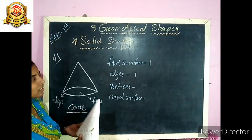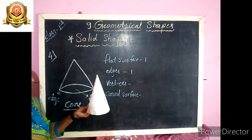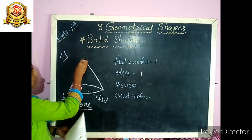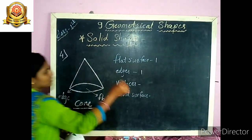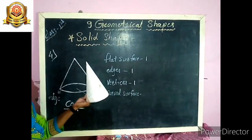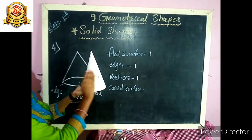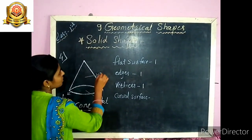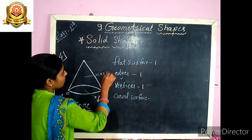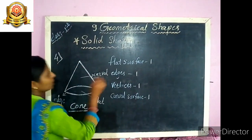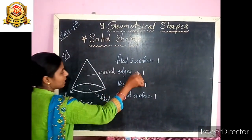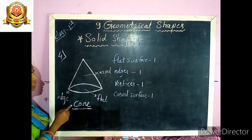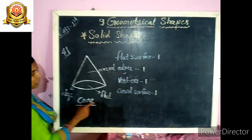How many vertices are there? Vertex means corner. Cone has only 1 vertex. And how many curved surfaces? 1 curved surface. So: cone has 1 flat surface, 1 edge, 1 vertex, and 1 curved surface. The spelling of cone is C-O-N-E, cone.